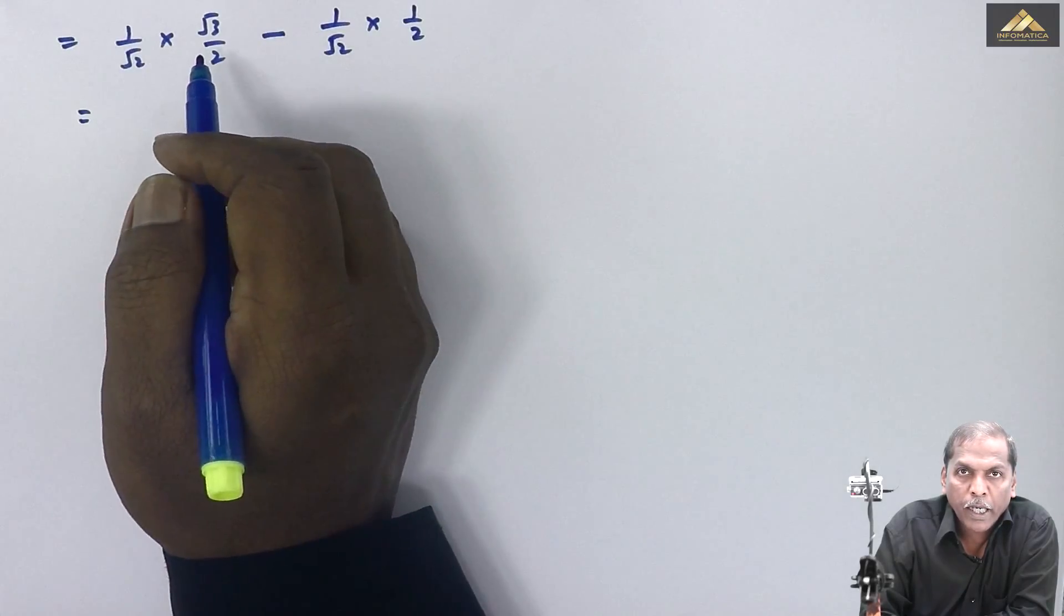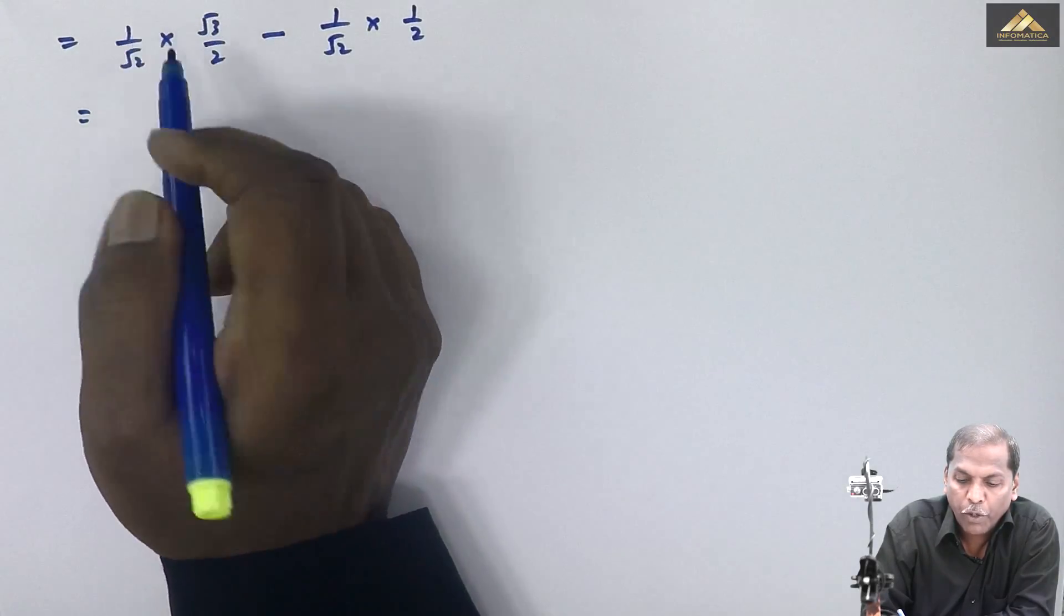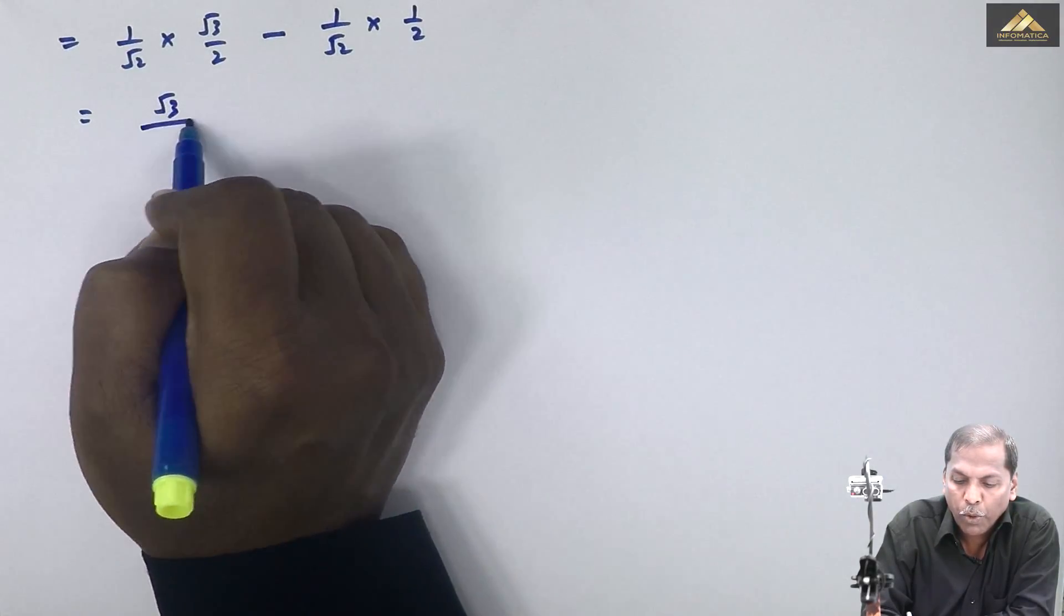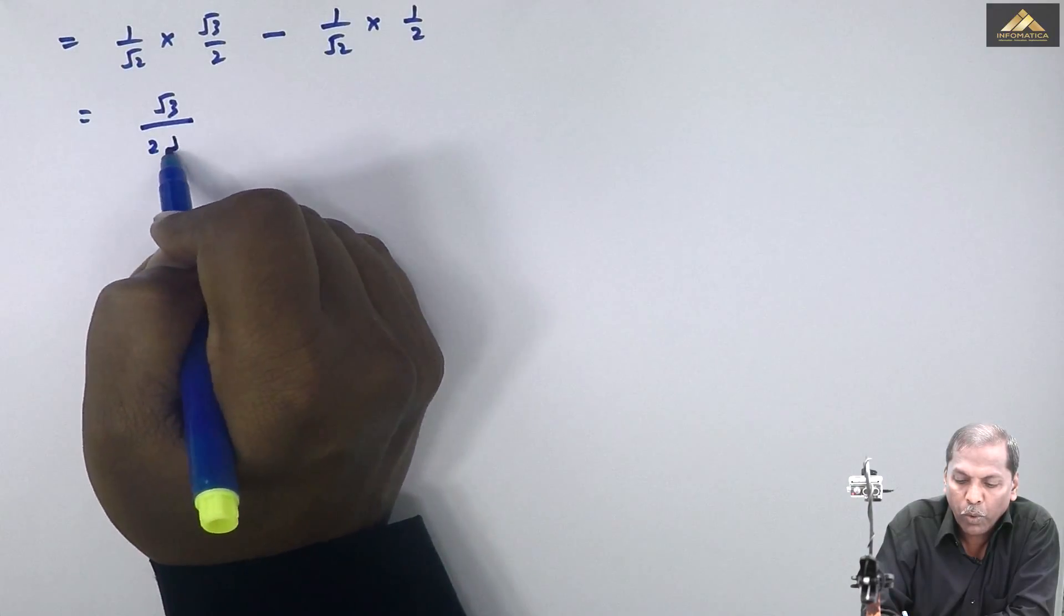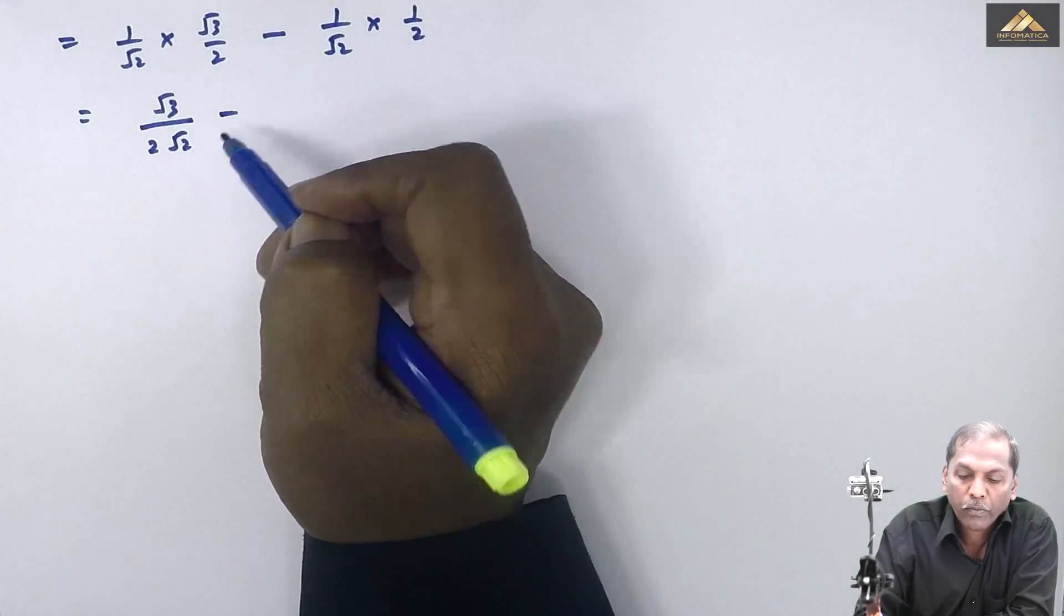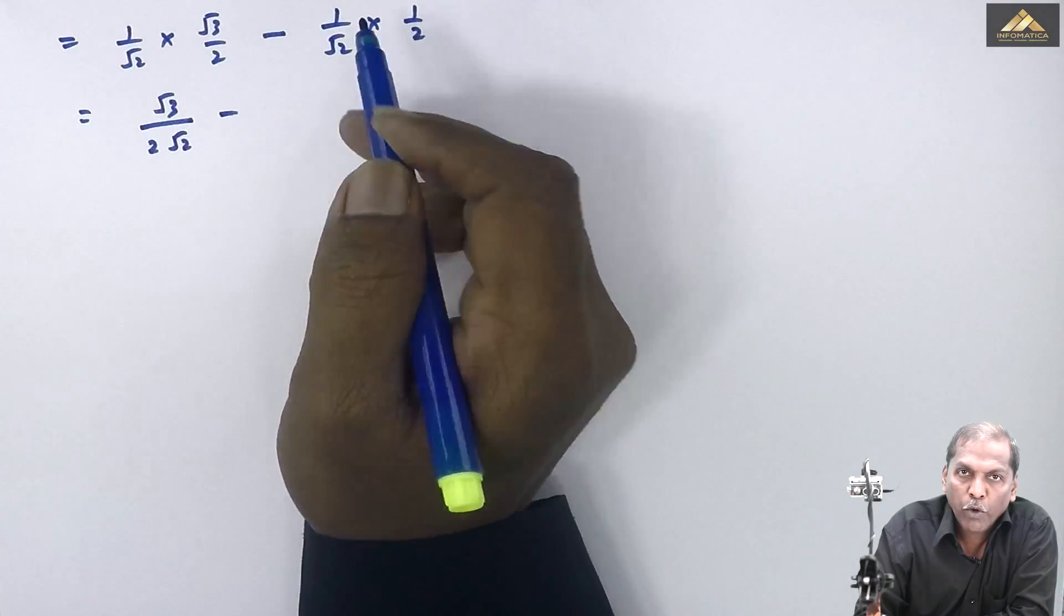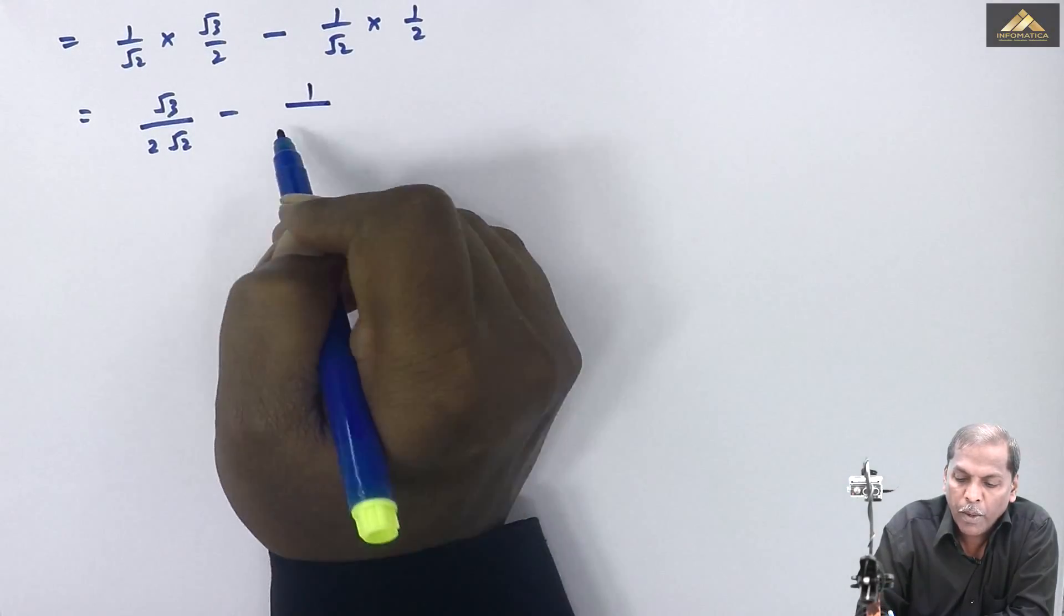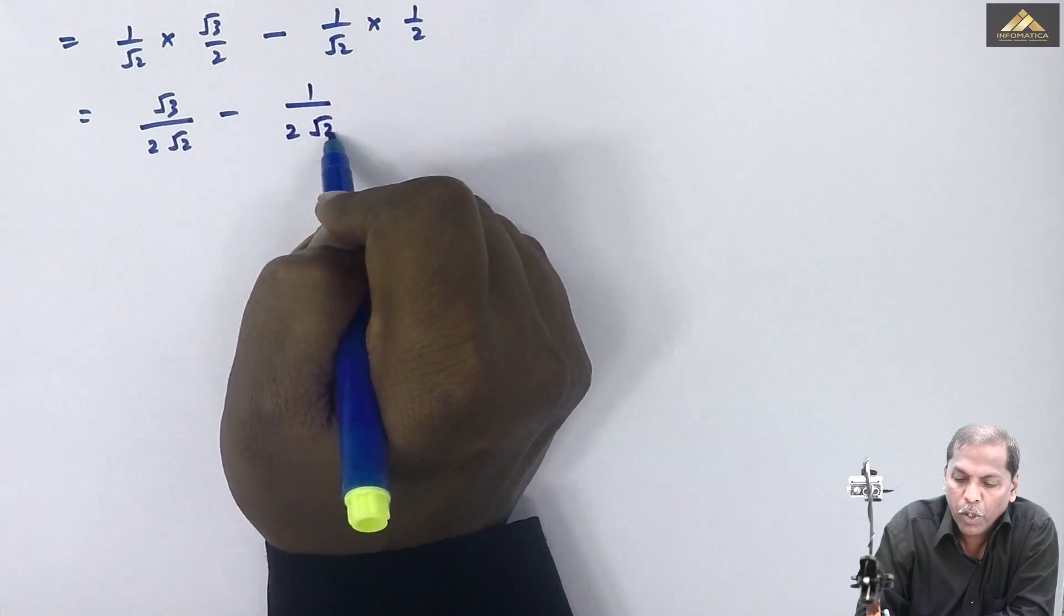If we multiply these, we get root 3 into 1, that gives you root 3 upon 2 root 2, then minus 1 by root 2 into 1 by 2. The answer we get is 1 upon 2 root 2.